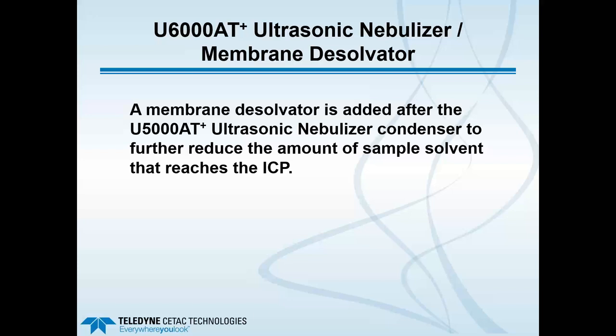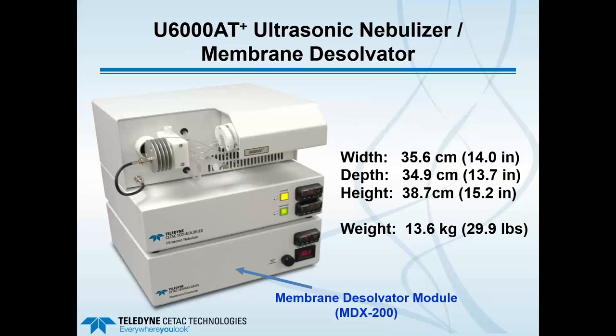With the ultrasonic nebulizer, we're going to add another component to it, changing the designation from U5000 to U6000. We add a membrane desolvator directly after the ultrasonic nebulizer condenser, to further reduce the amount of sample solvent — in this case volatile organics — that reaches the ICP. This is what the system looks like: it is a stackable module, meaning the ultrasonic nebulizer simply sits right on top of it, so the footprint remains the same. The height simply increases, and the combination of the two systems is designated as the U6000.